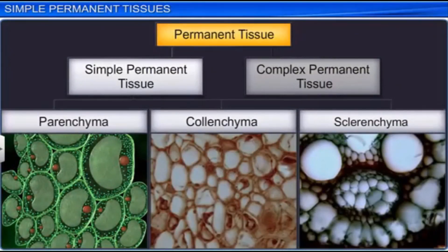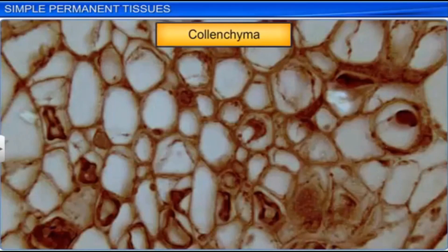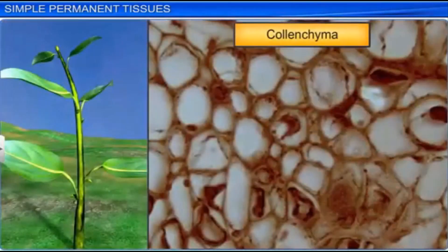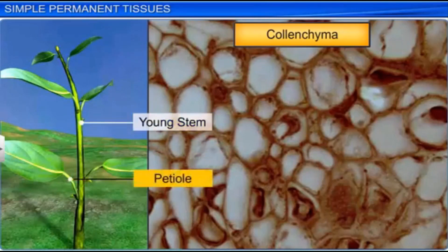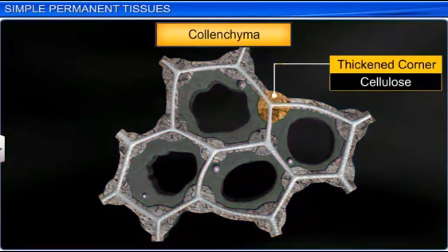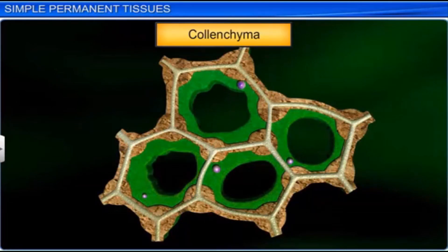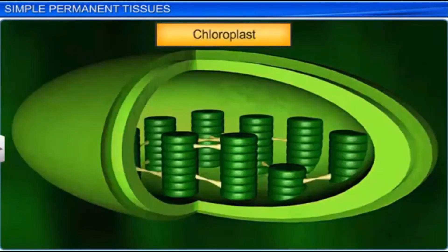The second type of simple permanent tissue is collenchyma. It is found in the layers below the epidermis of dicotyledonous plants, either homogenous or in patches. Collenchyma provides mechanical support to the growing parts of a plant, such as a young stem or the petiole of a leaf. The cells are thick at the corners due to cellulose, hemicellulose, and pectin deposits. They may be oval, spherical, or polygonal in shape with no intercellular space between them. These cells often contain chloroplasts and assimilate food by photosynthesis.